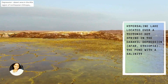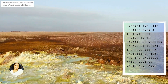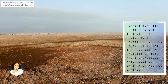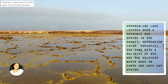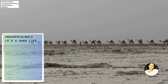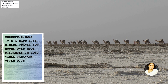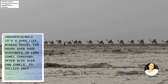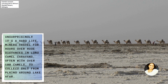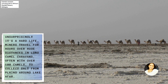The hypersaline lake is located over a tectonic hot spring in the Danakil Depression. The ponds with a salinity of 43 percent are the saltiest water bodies on Earth. It is a hard life in the region, as the miners travel for hours over huge distances in long camel caravans — often with over 100 camels — to collect salt from the plains around Lake Afar.